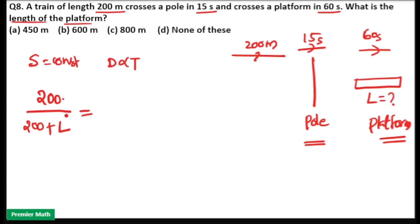So distance ratio is 200 divided by 200 plus L. Then time ratio is equal to time to cross the pole is equal to 15 seconds. Time to cross the platform is equal to 60 seconds.